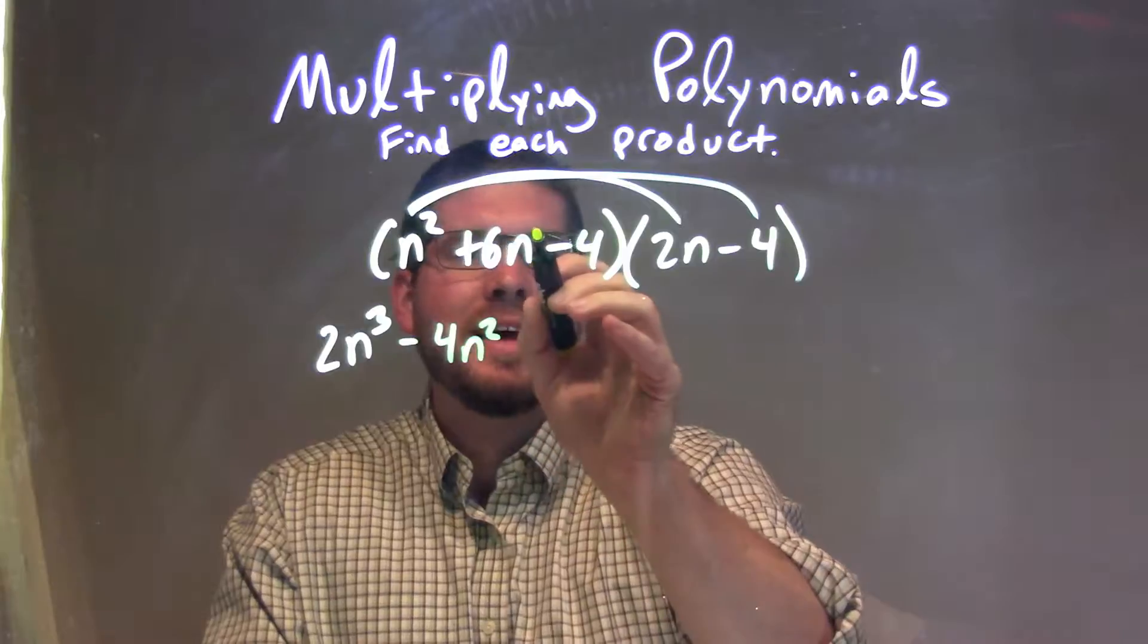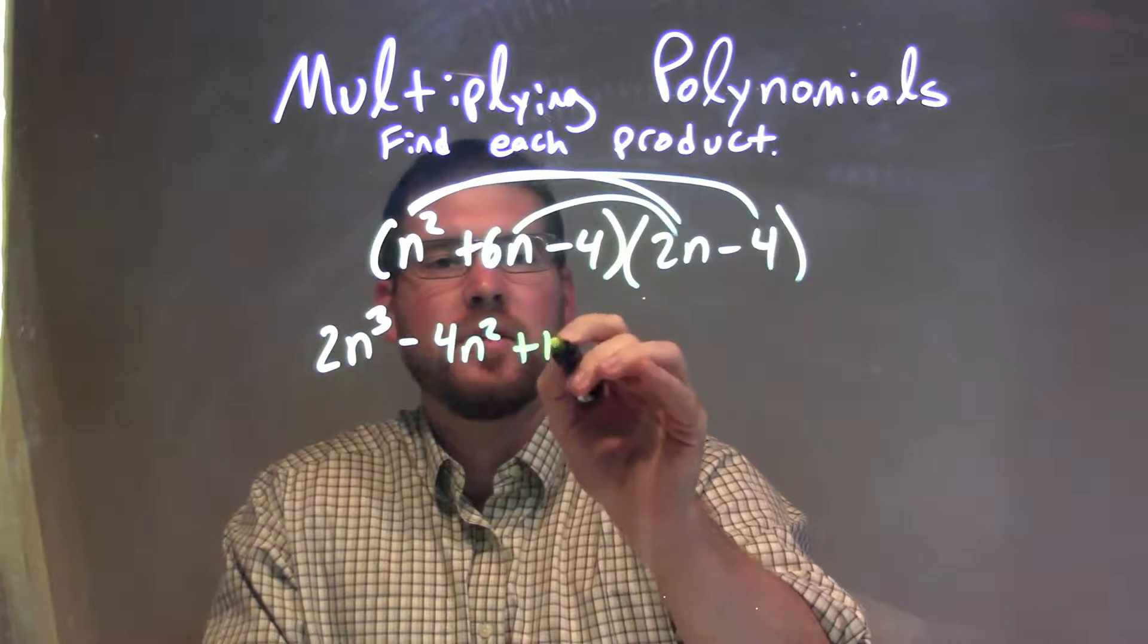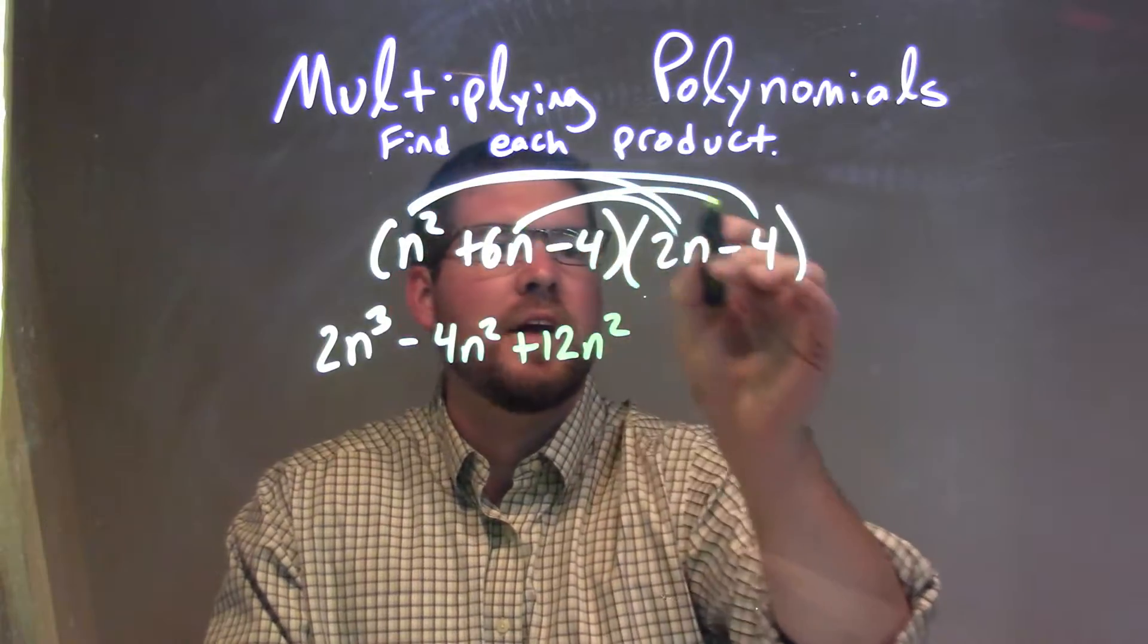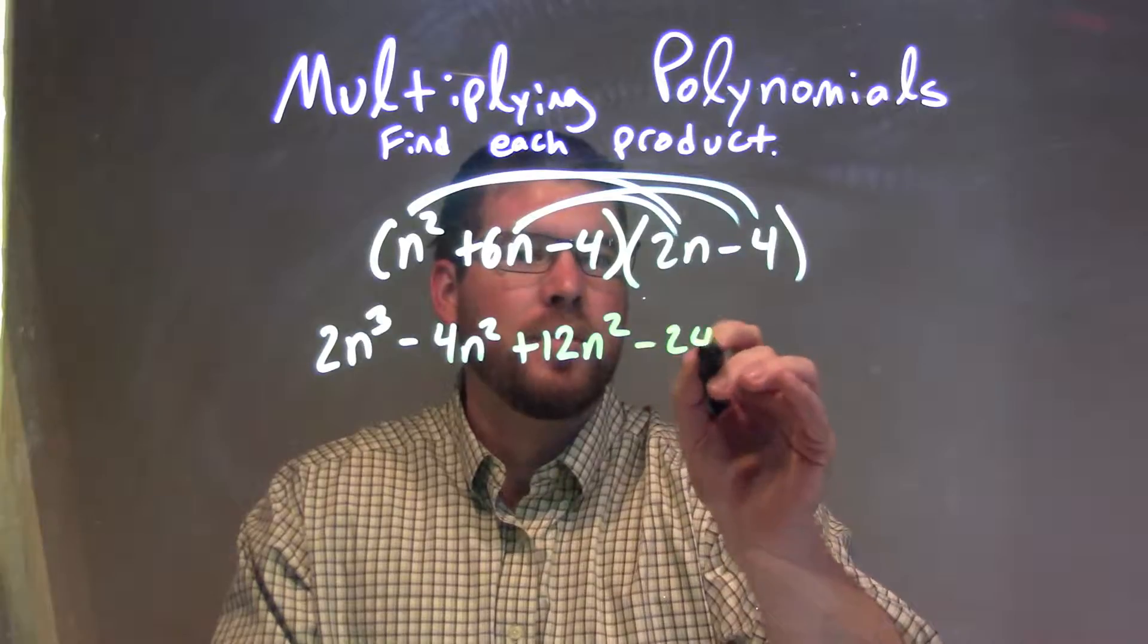So now let's deal with the 6n's. 6n times 2n is a positive 12n squared. 6n times minus 4 is minus 24n.